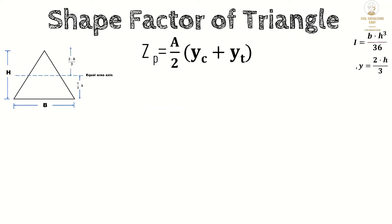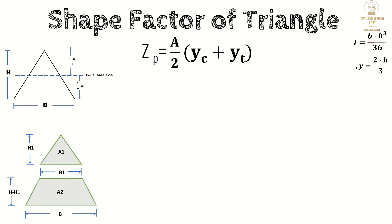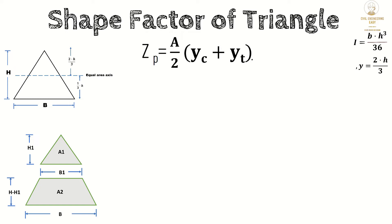Now let's calculate the plastic modulus. The formula is Zp = (A/2) × (yc + yt). To calculate yc and yt, we split the triangle into two equal parts about the equal area axis. Consider the two parts: above and below the equal area axis. The height of the new triangle will be h1 and the base will be b1. The total height is h, so the height of the trapezoid will be h minus h1.